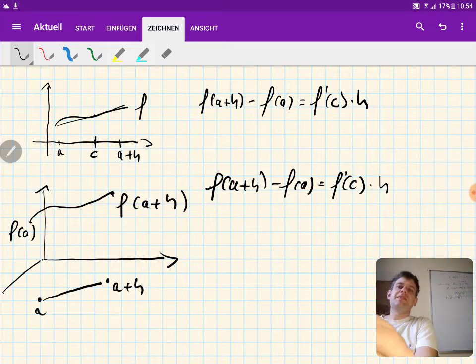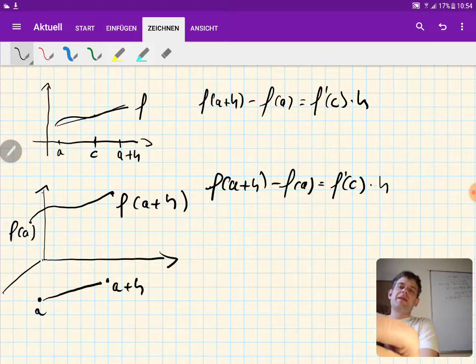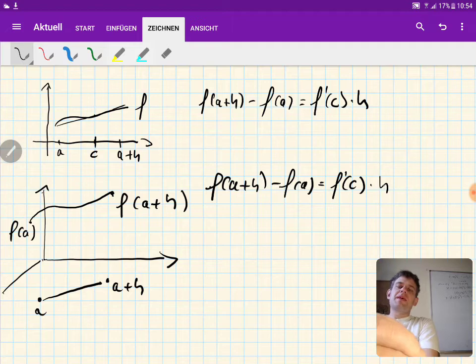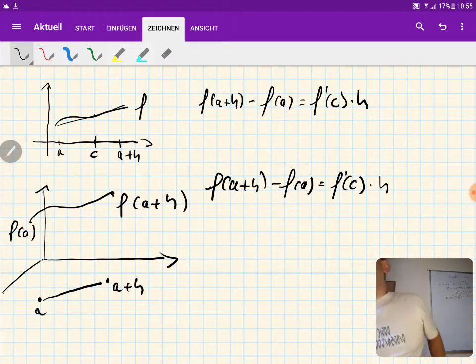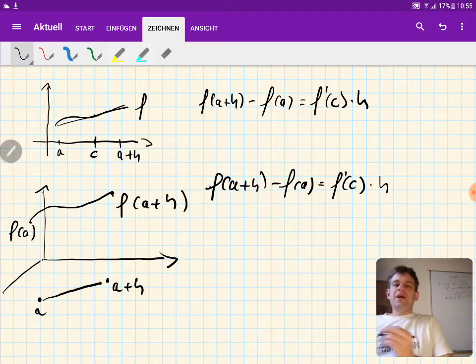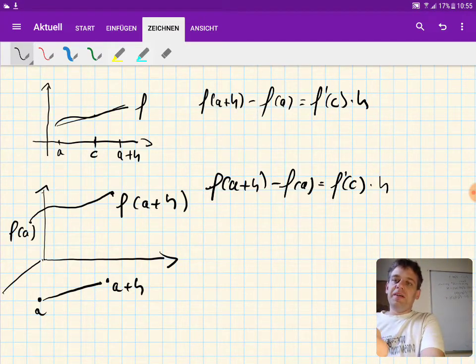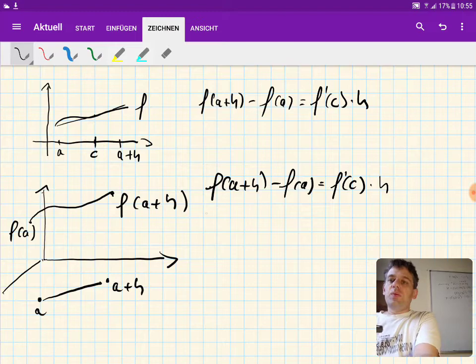So this is a vector multiplication. This is a matrix which is just the Jacobian matrix and this is our vector h. And this is the multi-dimensional version of the mean value theorem that we are now going to prove.